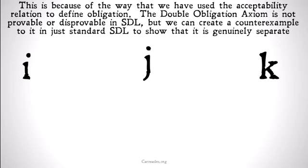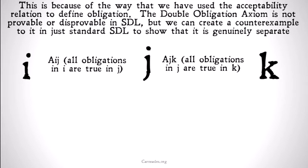We're going to imagine three possible worlds: possible world I, possible world J, and possible world K. J is acceptable to I, so all obligations in I are true in J, and K is acceptable to J, so all obligations in J are true in K. We remember that there has to be at least one world for every possible world in which all of the obligations in that world are true in some other world.